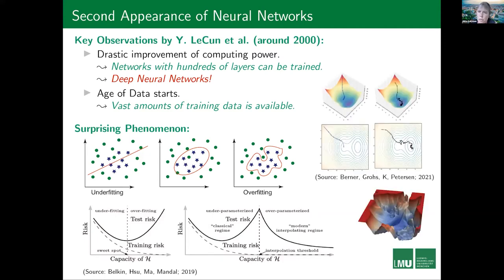There's another surprise: looking at the optimization strategy, with classical gradient descent you have very nice convergence. But with stochastic gradient descent, you have very erratic behavior and might end up in a different local minimum. In addition, the loss landscape is actually extremely complicated. That makes it even more surprising that neural networks behave that well.